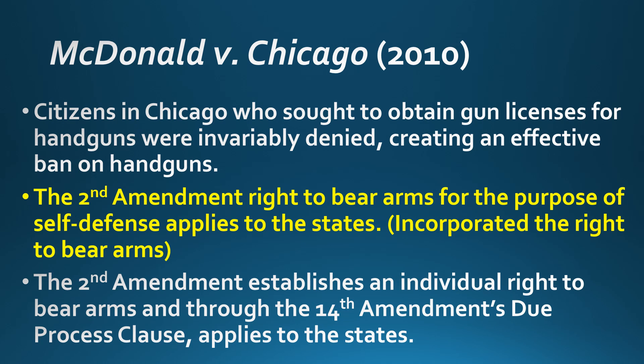McDonald versus Chicago is one of two 2010 cases. Chicago had essentially banned handguns by denying all gun license applications. The Supreme Court ruled that states and local governments cannot do this. The Second Amendment's right to bear arms — including for self-defense, not just tied to a militia — applies to the states. This incorporated the right to bear arms for personal self-defense. Building on DC versus Heller in 2008, which established an individual right to bear arms, this case applies that right to the states via the 14th Amendment's Due Process Clause.